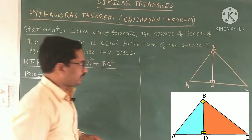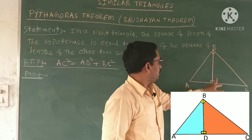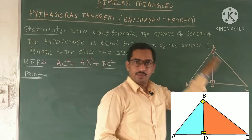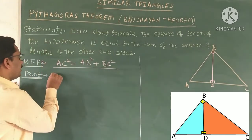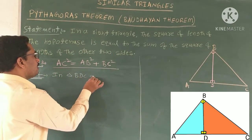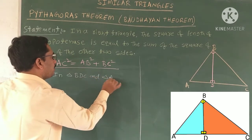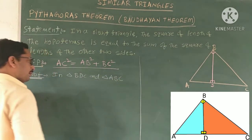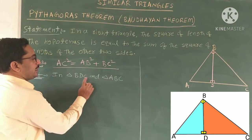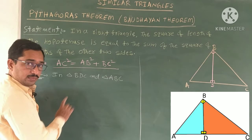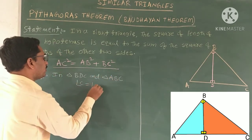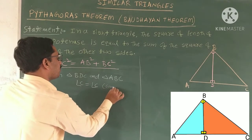Now select two more triangles: triangle BDC, the right side triangle, and the complete whole triangle ABC. I am going to prove these two triangles are also similar. Here the letter C is common in both triangles, so angle C equals angle C — it is a common angle.